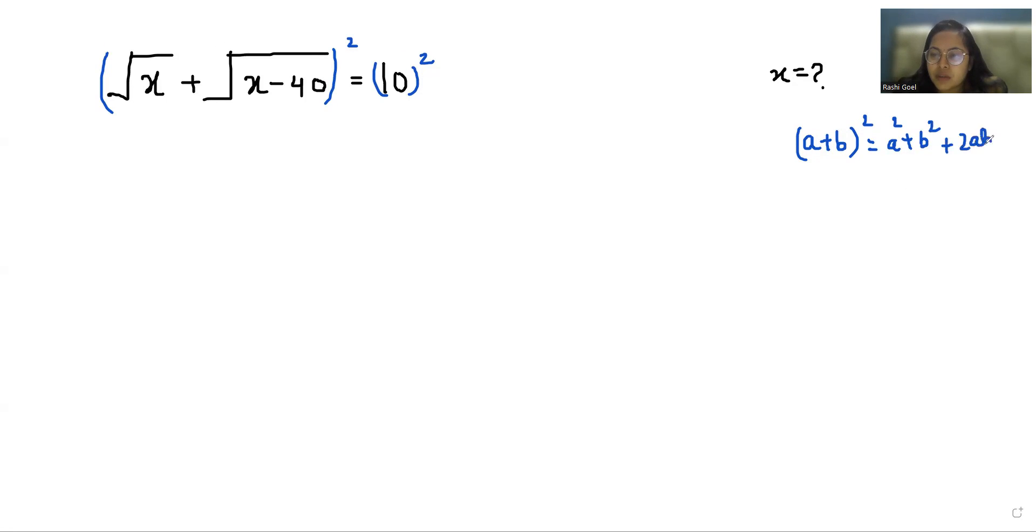Plus 2ab, where a is under root x and b is under root x minus 40. So let's put the value. It becomes under root x square plus under root x minus 40 whole square plus 2 times under root x times under root x minus 40 equals 10 square is 100. So under root cancels out with this square.